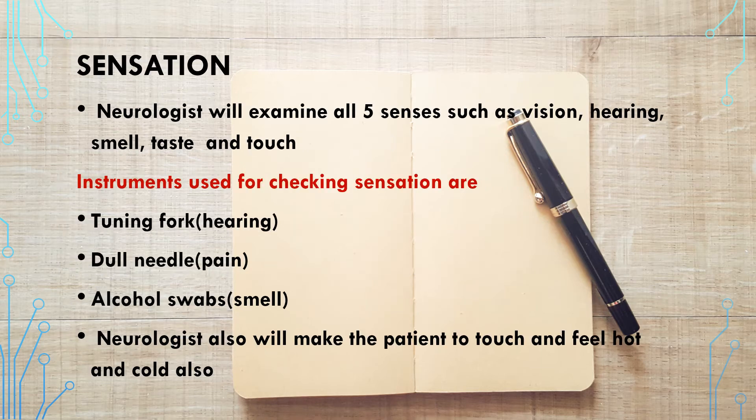Next is sensation testing. To check sensation, the neurologist will examine all five senses: vision, hearing, smell, taste, and touch. The instruments used for checking sensation are a tuning fork, dull needle, and alcohol swabs. The neurologist will also make the patient touch and feel hot and cold stimuli as part of the sensation testing.